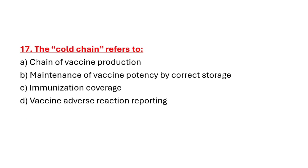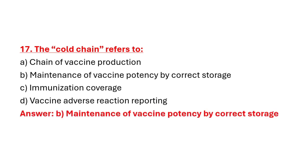Question 17: The cold chain refers to. Option A: Chain of vaccine production. Option B: Maintenance of vaccine potency by correct storage. Option C: Immunization coverage. Option D: Vaccine adverse reaction reporting. Correct answer is Option B: Maintenance of vaccine potency by correct storage.